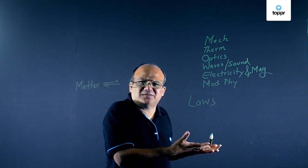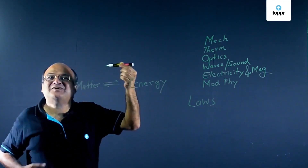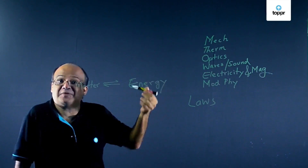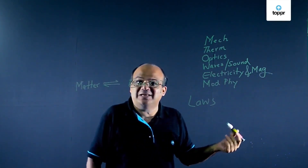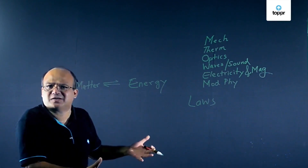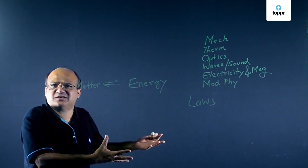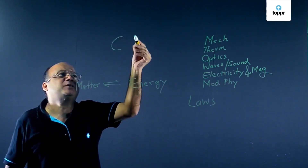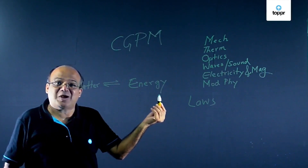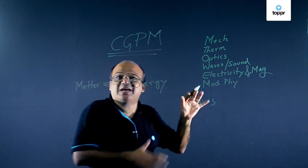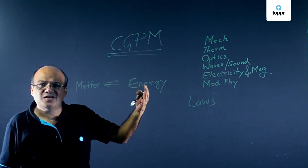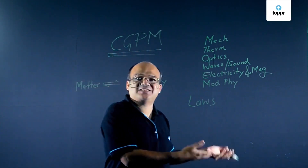Now who decides the units? Can I make an announcement that the mass of this pan will be called 1 kg? No. Can the chief minister of Maharashtra, the prime minister of India, or the president of the US do that? No. These things are decided by a body called CGPM — in French, whose full name in English is General Conference of Weights and Measures. This body decides what units we can use and what the definitions of these units are.